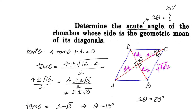To recap: the side of the rhombus equals the geometric mean of its diagonals. In a rhombus, diagonals bisect each other at 90° and are angular bisectors. Applying the Pythagorean theorem gives d1²/4 + d2²/4 = d1·d2. Converting to a quadratic in d2/d1, since tan θ = d2/d1, we get tan θ = 2 - √3, so θ = 15°, meaning the acute angle of the rhombus is 2 × 15° = 30 degrees.